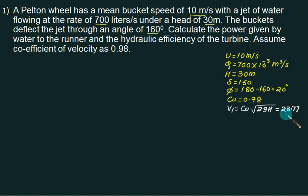Cv is 0.98, H equals 30 meters. We can put this value and you can obtain V1 equals 23.77 meters per second. So let's construct here a diagram. This represents the velocity V1 equal to 23.77. V1 is same as Vf, Vw1. We have blade velocity U equals 10 meters per second.